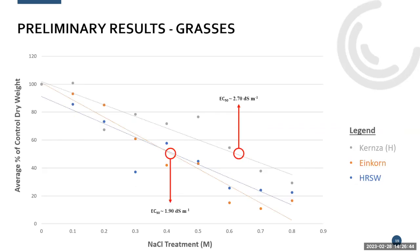For the grasses — einkorn, hard red spring wheat, and kernza — einkorn and hard red spring wheat performed similarly, both reaching 50% biomass reduction at an EC of 1.9. Kernza did better, not reaching 50% biomass until an EC of 2.7. Because kernza is a perennial, we can potentially skip the sensitive germination and early vegetative stages since we don't have to replant it each year, making it a good candidate for future experiments.